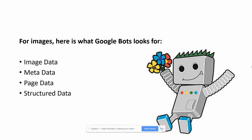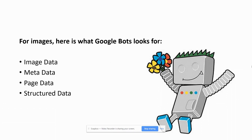For images, this is what the Google bot is looking for: image data, metadata, page data, and structured data. We've got four areas we really need to make sure we have on our sites. Image data is going to be things like alt text and title text. Your metadata is going to be your descriptions and titles. Your page data is going to be the content on that specific page. And structured data is going to be the markup, where we add schema structured data to different elements, including images on our site.